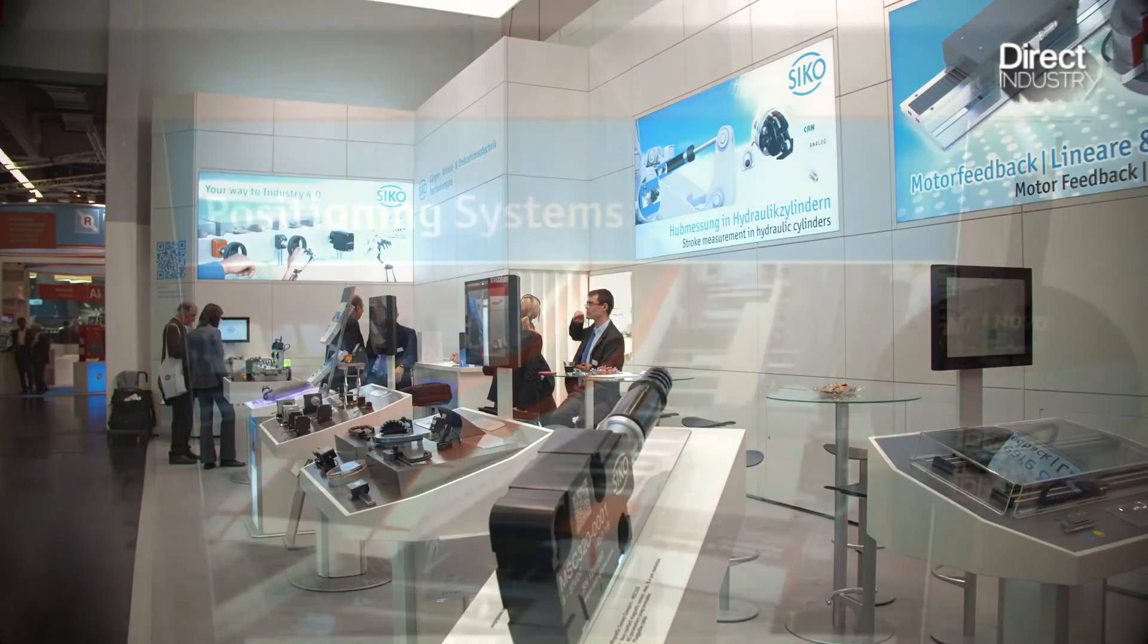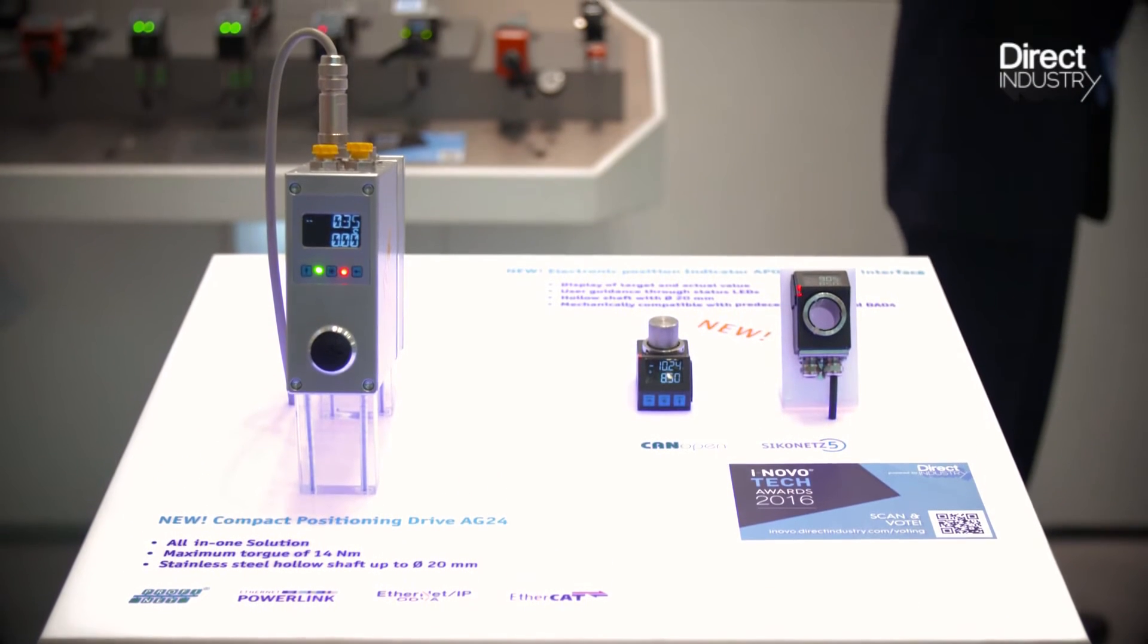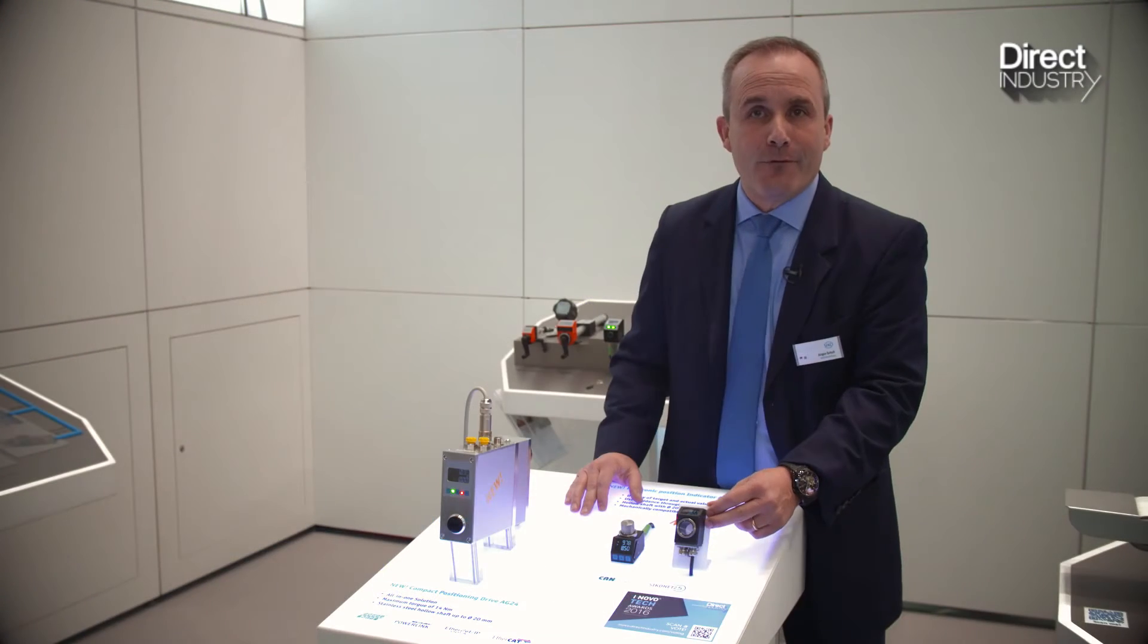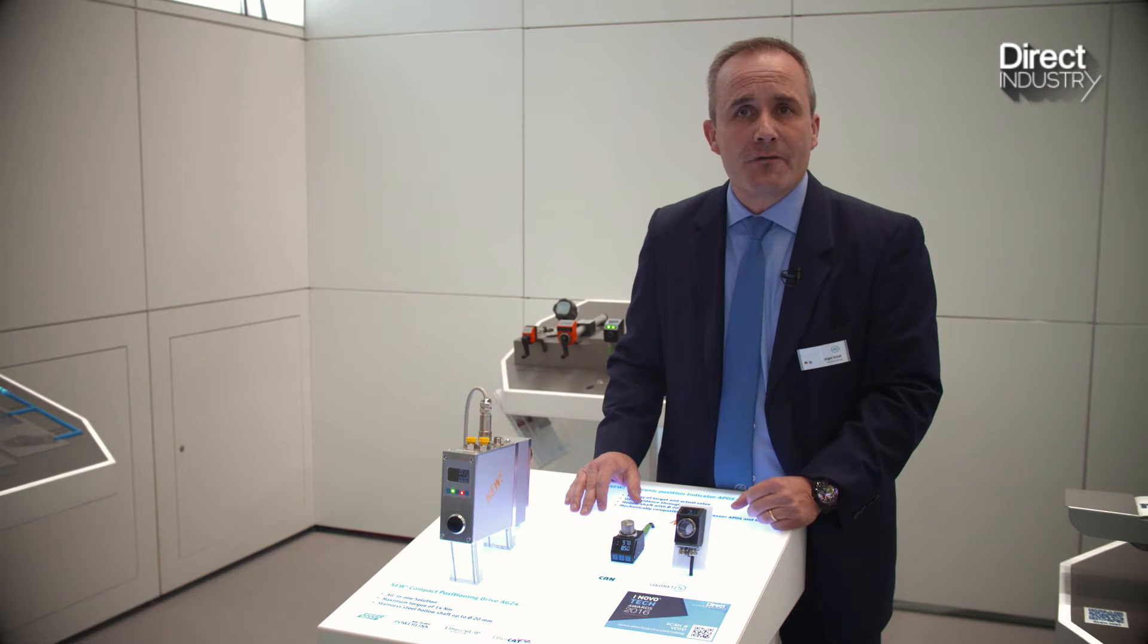In the first step I would like to show you our new indicator called APO5. This indicator is used for format adjustment, for setting up machines, for different changeovers.